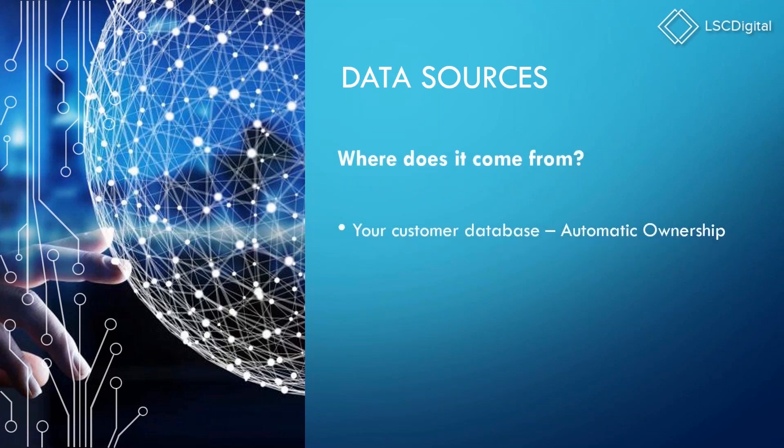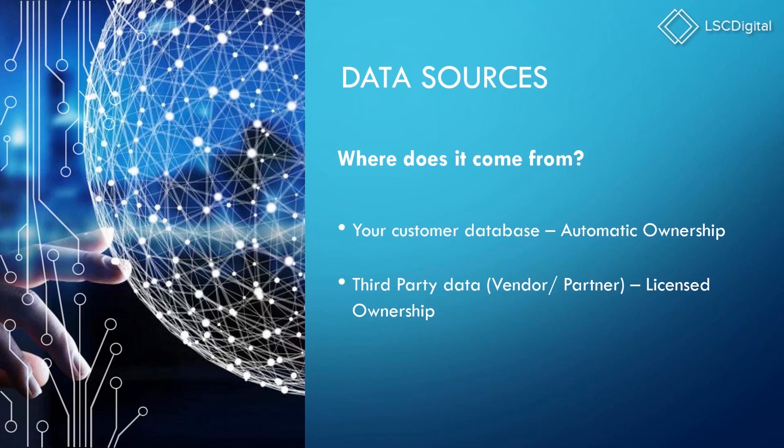This brings us to data sources — where is your data coming from? You have your customer databases, which are typically people you've communicated with directly, made purchases from, or come from your sales team — this is automatic ownership. You also have third-party data from a vendor or partner, such as a purchased acquisition list, where the rights are defined by whoever is giving you the data, typically for a one-time campaign use or unlimited use.